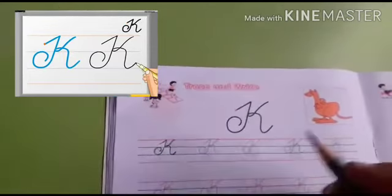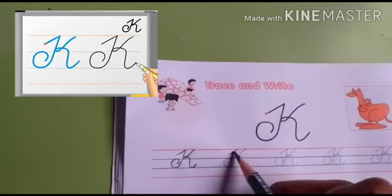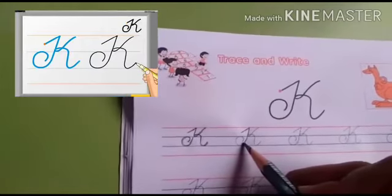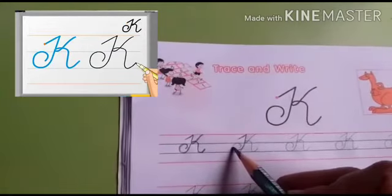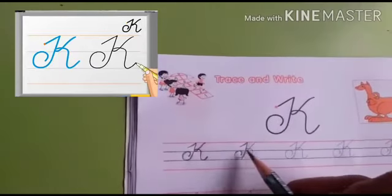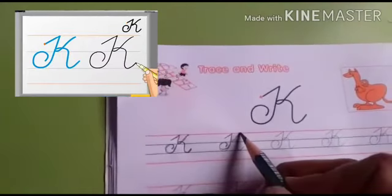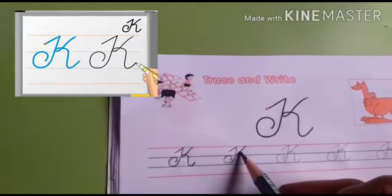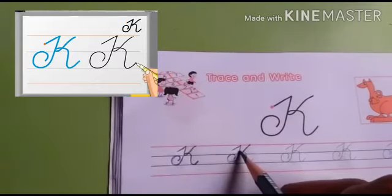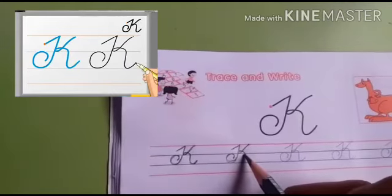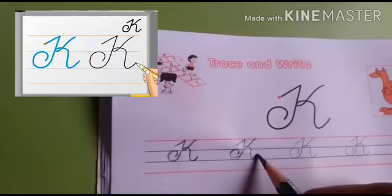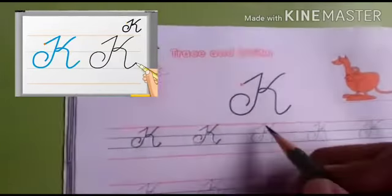Put your pencil point between first and second line, then go up with a slant line till the top line. Now come down till the third line and turn back side. Put your pencil point at the top line and come down with a curve line, and again come down with a curve line till the third line and little bit go up. This is K.